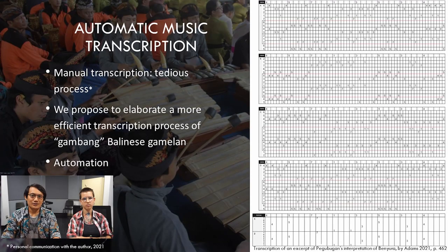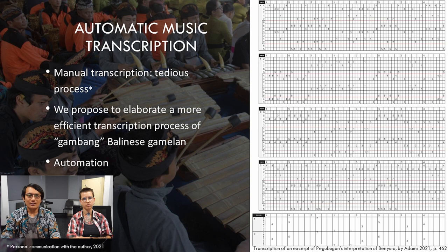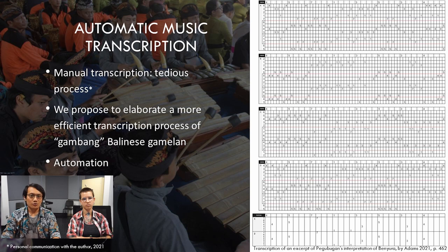Adams already proposed a type of cipher notation, which consists of numbers from 1 to 7 representing note values. He manually transcribed gambang performances from audiovisual recordings using these notations. While Adams performed significant transcription efforts, it proved to be a tedious process. We wish to expand the work he started by realizing many more transcriptions of longer excerpts. To do so, we propose to elaborate a more efficient transcription process of Gambang Balinese Gamelan.